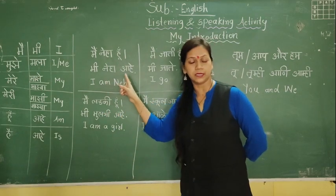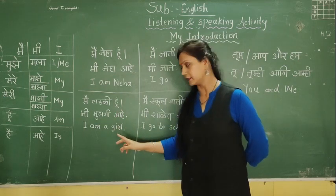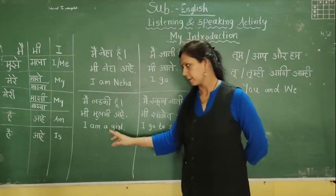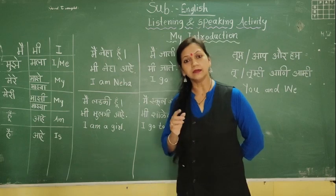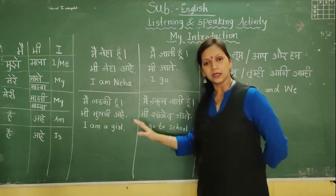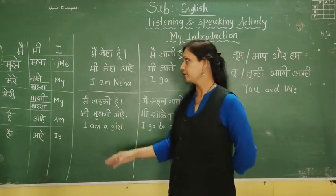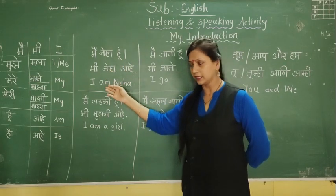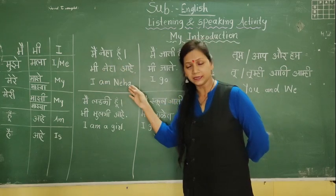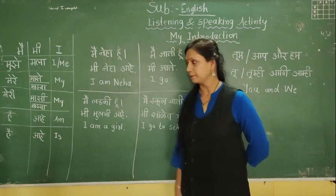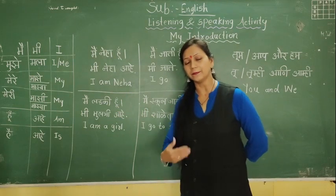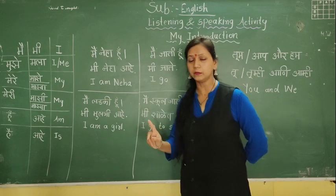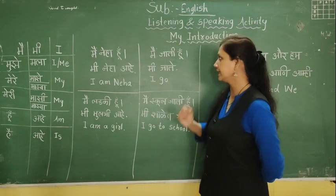In Hindi: 'मैं लड़की हूँ'. Neha is saying in Marathi: 'मी मुलगी आहे'. In English: 'I am a girl'. So what she is telling — I am a girl, मी मुलगी आहे, मैं लड़की हूँ. If there is a boy, like मैं स्वराज हूँ, मैं दीपक हूँ — मी दीपक आहे, I am Deepak. Then if you are a boy: मैं लड़का हूँ, मी मुलगा आहे, I am a boy. Okay.